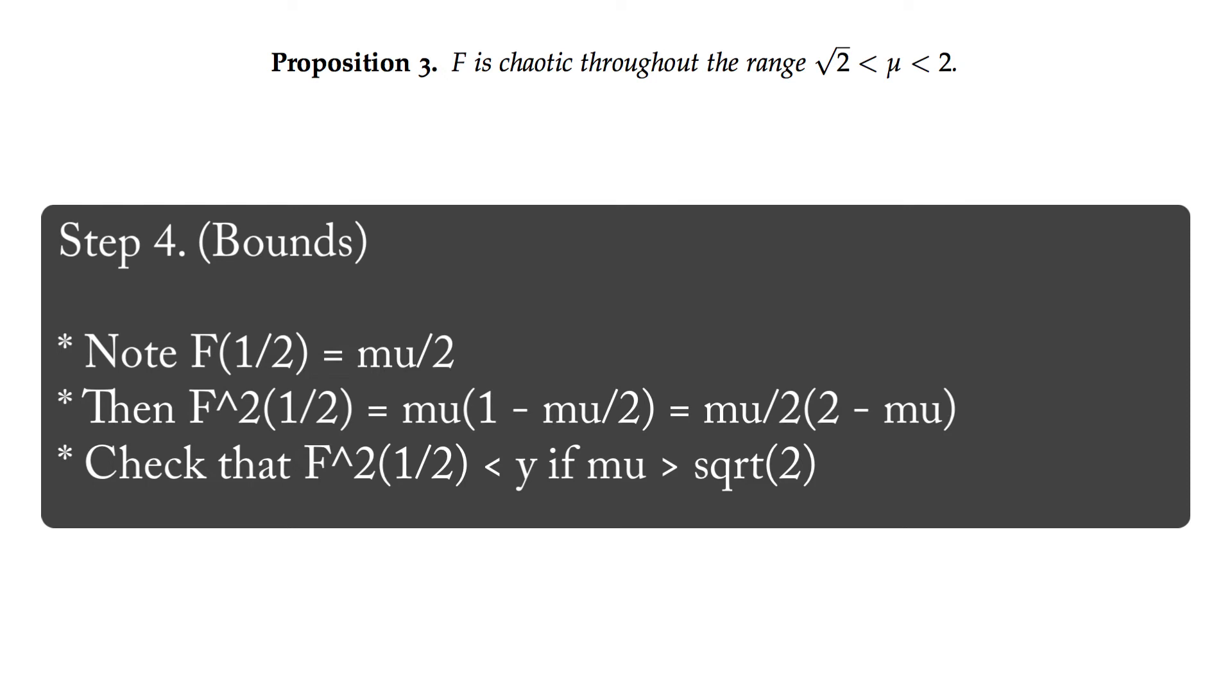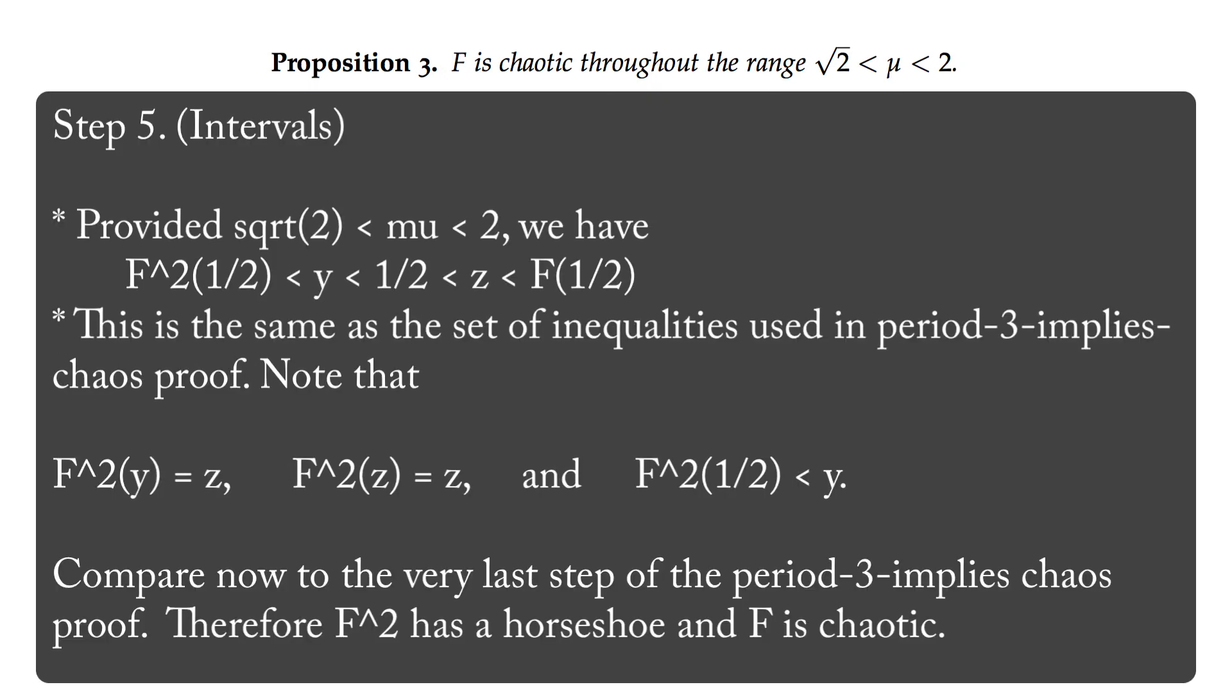Step 5: In other words, provided that mu is between root 2 and 2, we have the following inequalities: f squared of 1 half is less than y, which is less than 1 half, which is less than z, which is less than f of 1 half. Moreover, z is sent to itself, and y is sent to z.